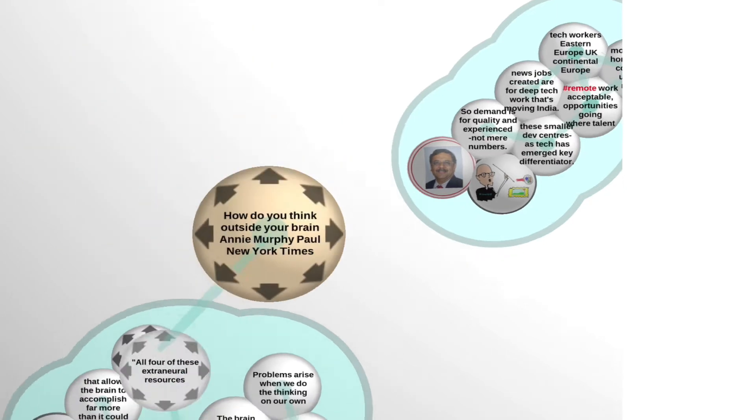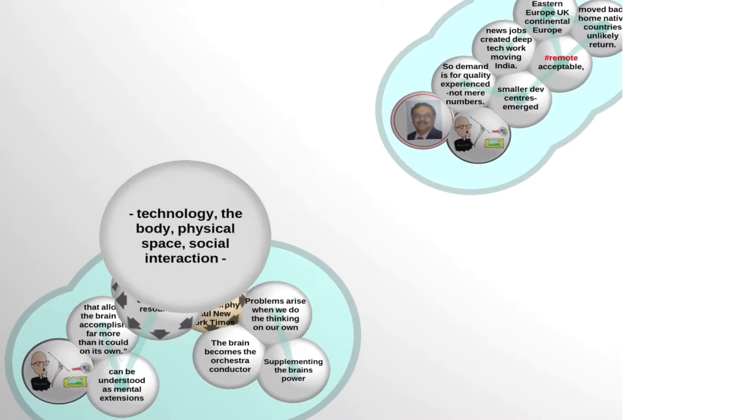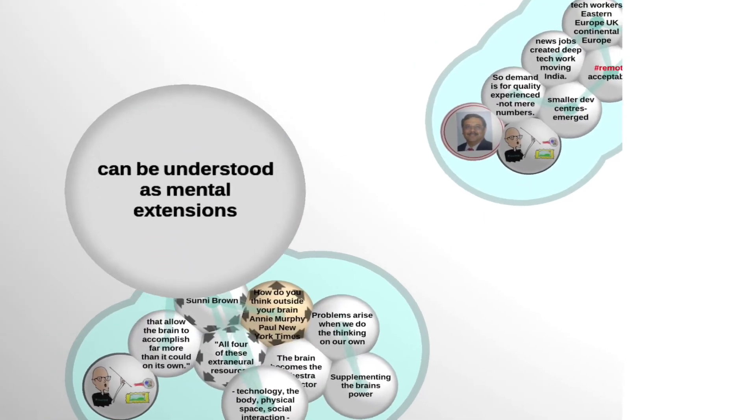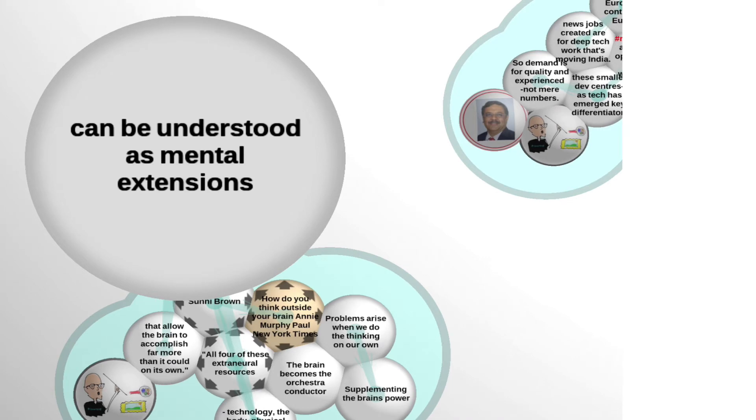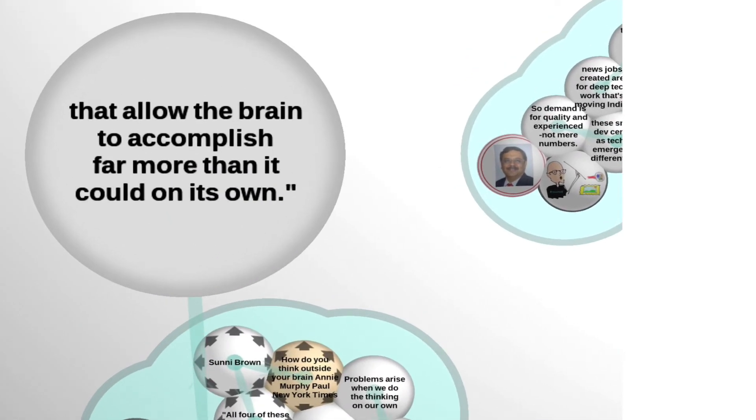Annie identifies that all four of these extra neural resources - namely technology, your body, physical space, and social interaction - can be understood as mental extensions and allow the brain to accomplish far more than it could on its own.